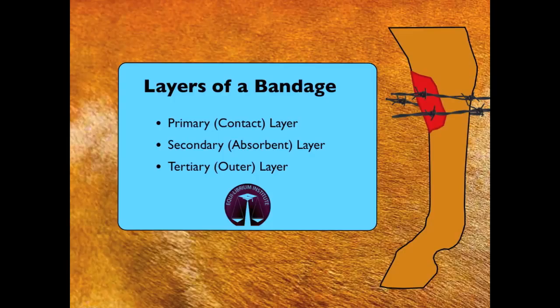The final step in accelerating wound healing is to apply a bandage to protect the wound. Most bandages are applied in three layers: a primary layer that contacts the wound, a secondary absorbent layer, and a tertiary outer layer.